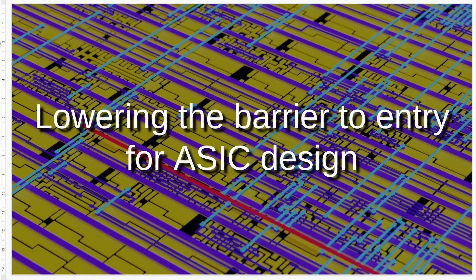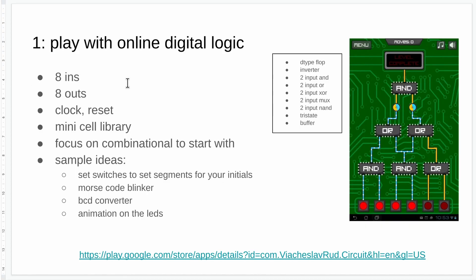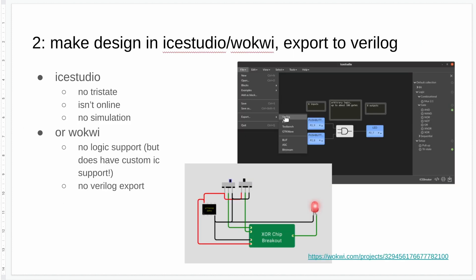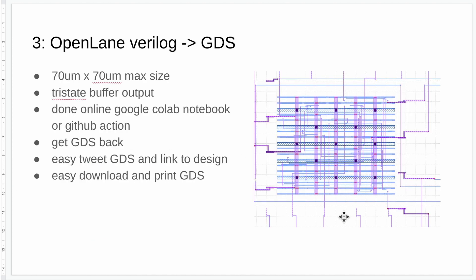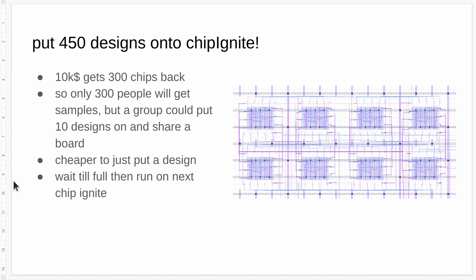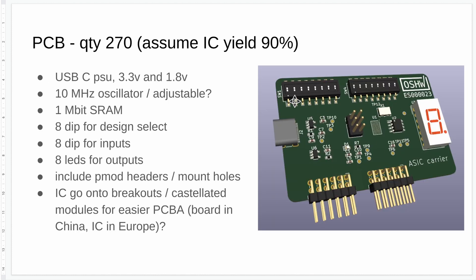Talking about lowering the barrier to ASIC design, I've come up with another crazy idea: trying to put 450 designs on one chip ignite shuttle. That costs $10,000, and then we can spread that cost out between lots of people. This would be a cloud-based drag-and-drop system with a very limited number of standard cells. Ideally it would be a bit like Blockly where you can do some drawing and drag-and-drop, but you also get to see the HDL. Every person gets 70 by 70 microns — very small, but still would let you put 50 to 100 gates — and then we concatenate all of those together on a chip ignite shuttle and put the chips on a little board.